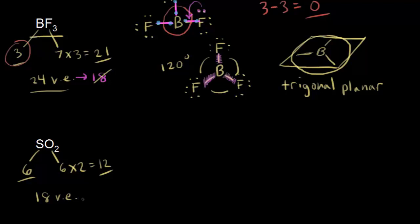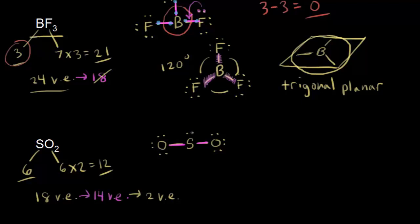Sulfur is less electronegative, so sulfur goes in the center, bonded to two oxygens. That represents four valence electrons, so 18 minus four leaves 14 valence electrons. We assign those leftover electrons to the terminal atoms, which are our oxygens. Oxygen follows the octet rule, so each oxygen gets six more electrons to give it an octet. That represents 12 more valence electrons, so 14 minus 12 leaves two valence electrons. When you have leftover valence electrons, you put them on your central atom, so we place those two valence electrons on the sulfur.